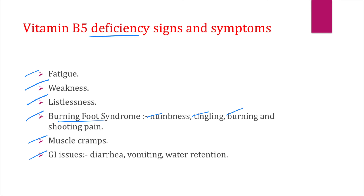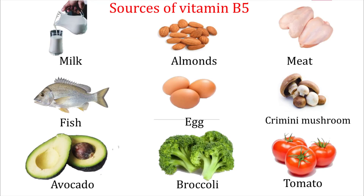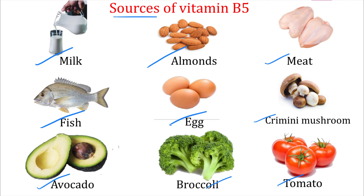The major sources of vitamin B5 are milk, almonds, meat and chicken breast, fish, eggs, mushrooms, avocado, broccoli, and tomato. People who are deficient in vitamin B5 can include these sources in their daily diet to replenish deficient stores.